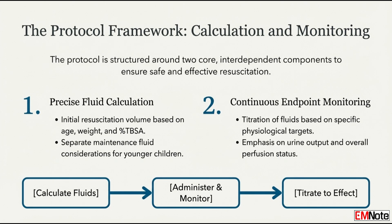Now let's talk strategy. If the traditional Parkland formula uses higher volumes, what's the specific advantage of the modified Brooke's more conservative take? What are we fundamentally trying to avoid? Over-resuscitation. We are fundamentally trying to avoid the complications of giving too much fluid. And in a child, that's even more dangerous — the margin of error is tiny. Excess fluid rapidly translates into major physiologic problems, specifically pulmonary edema and increased intra-abdominal pressure. The modified Brooke formula tackles this by deliberately targeting lower fluid volumes.